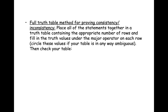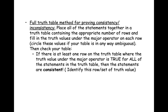Then we're going to check the table. If there is at least one row on the truth table where the truth value under the major operator is true for all of the statements, then the statements are consistent. Essentially, we are identifying a set of truth values that makes all the statements true, and that proves that the statements are consistent.